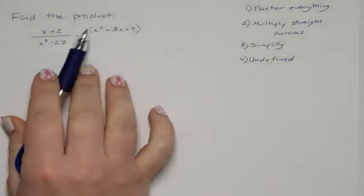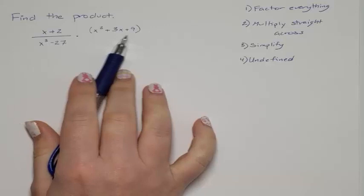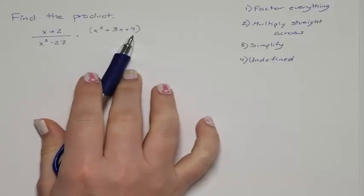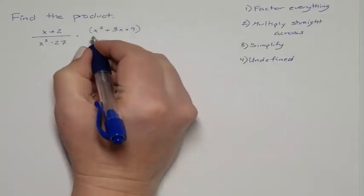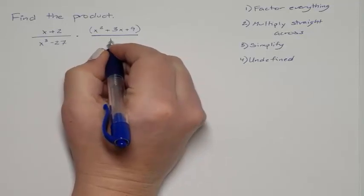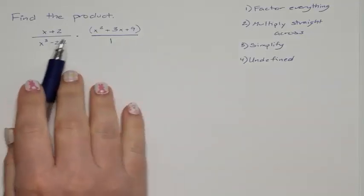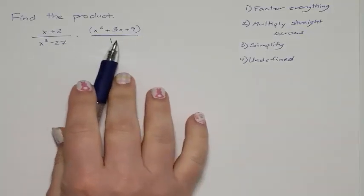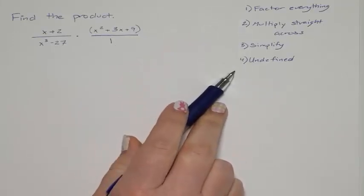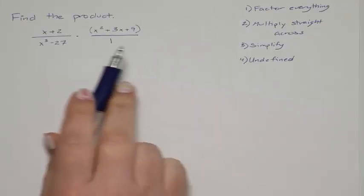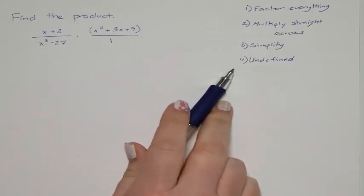We are being asked to find the product, and we have a fraction being multiplied to a non-fraction. If we have a fraction involved in the problem, remember that you actually need to make all the other numbers fractions by putting ones underneath them. So we have a fraction multiplied by a fraction, and we're going to keep with the steps we came up with in previous videos.